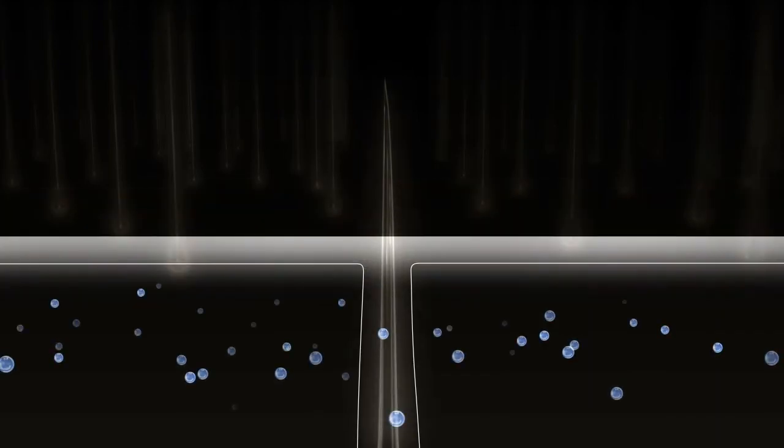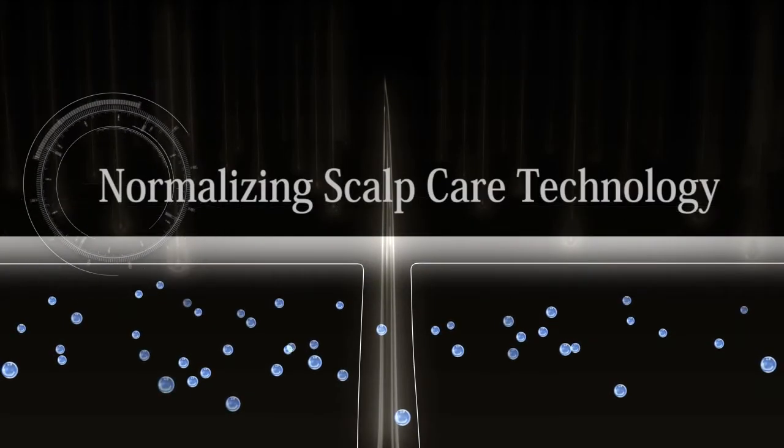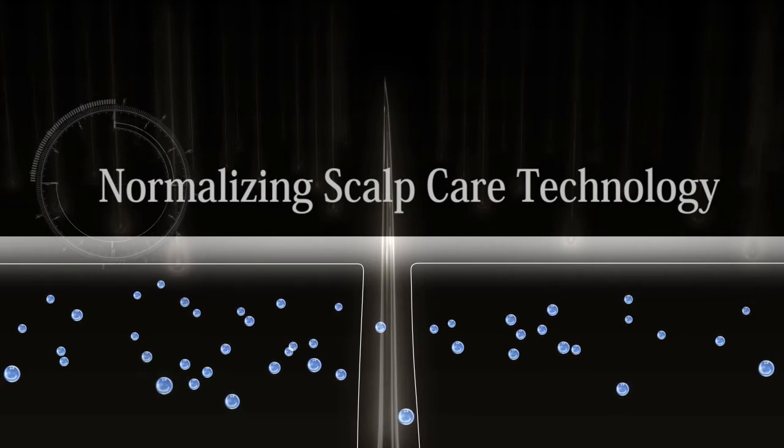This realization led Millbone to develop the Normalizing Scalp Care technology to remove excess fatty acids on the scalp and bring essential moisture and natural oils back into a healthy balance.